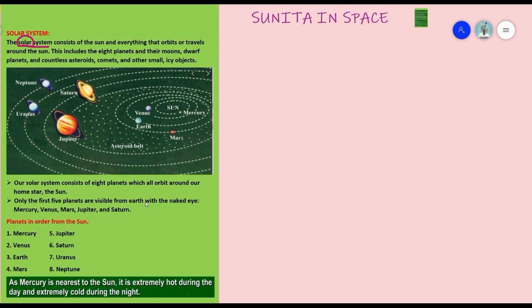Only the first five planets are visible from the Earth with the naked eye. In order from the Sun — that is, based on their distance and circular orbital path — the planets are: first Mercury, then Venus, Earth, Mars, Jupiter, Saturn, Uranus, and Neptune.